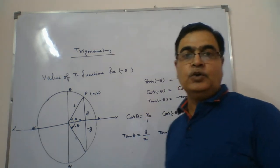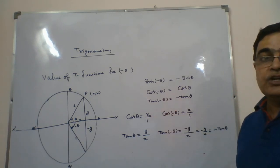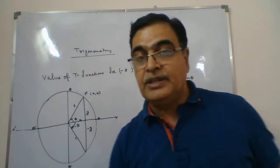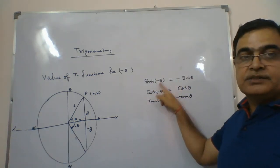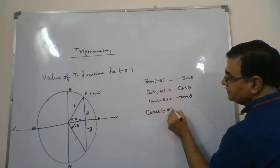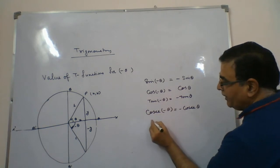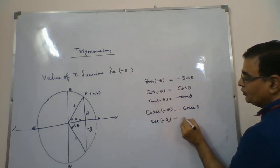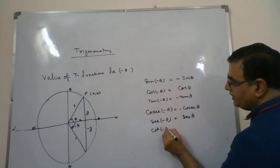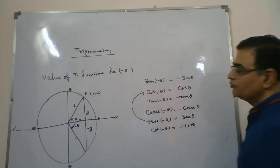So three results: sine of minus theta is minus sine theta, tan of minus theta is minus tan theta, and in cos the minus is removed — cos of minus theta equals cos theta. The same results apply to reciprocals: cosec of minus theta equals minus cosec; sec of minus theta equals sec theta (minus removed); and cot of minus theta equals minus cot.